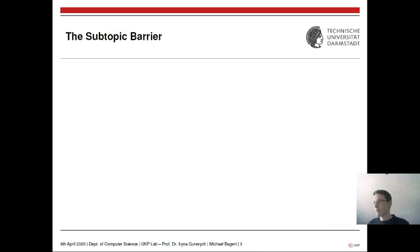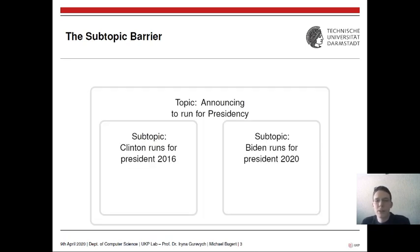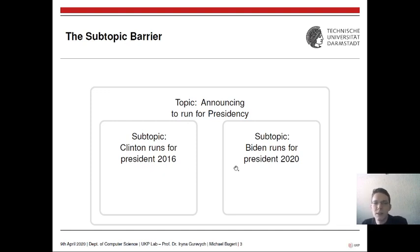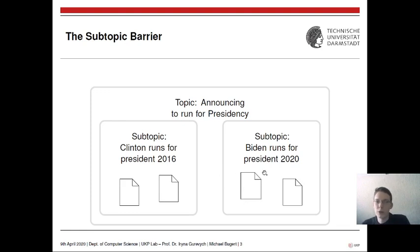Our paper's title is 'Breaking the Subtopic Barrier,' so what is the subtopic barrier? To explain that, we need to look at the usual structure of corpora for this task. Corpora are typically structured into topics and subtopics. For example, a topic called 'announcing to run for presidency' might have two subtopics: 'Clinton runs for president 2016' and 'Biden runs for president in 2020,' each with associated documents.